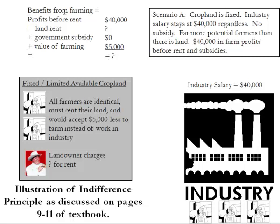Up here we can see the benefits to each farmer from farming, on a per-farmer basis. The profits before rent are $40,000. We subtract out land rent and any government subsidy, then add the value of farming. Assuming land rent is zero right now, the benefits from farming work out to $45,000.